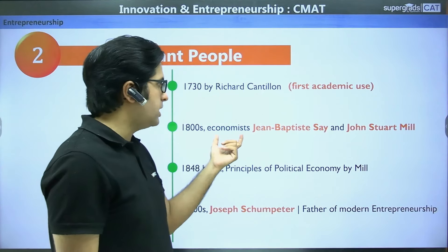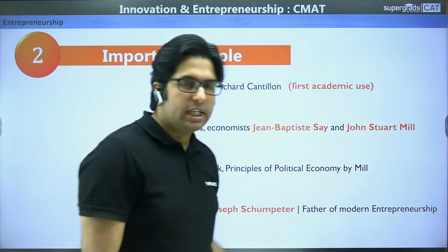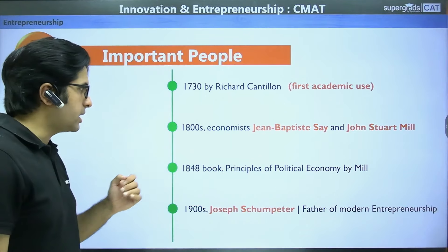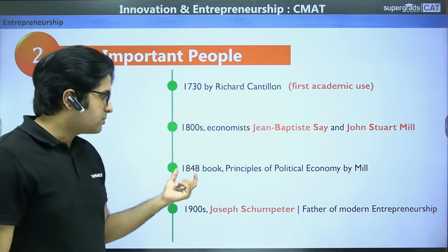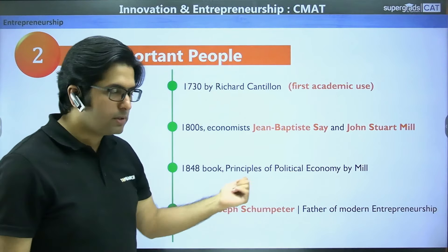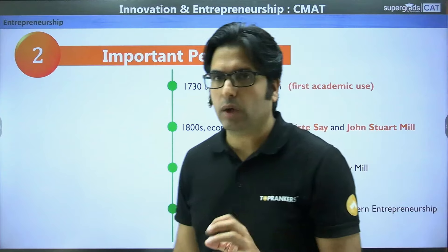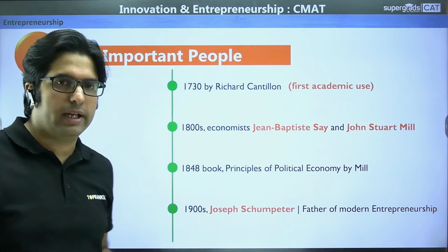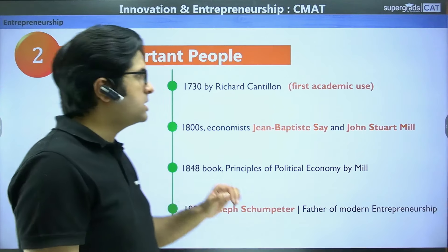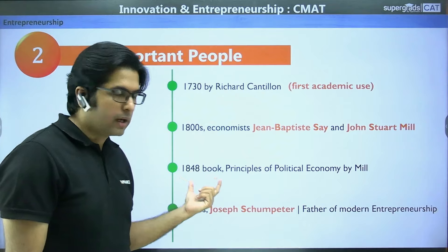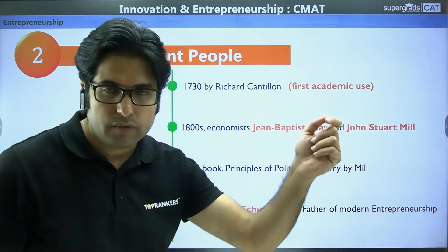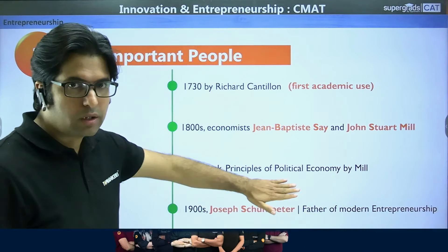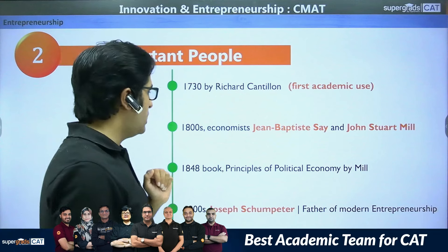Then around the 1800s, economists Jean-Baptiste Say and John Stuart Mill were the two important economists who made heavy use of entrepreneurship in the sense we use today. In his book Principles of Political Economy published in 1848, J.S. Mill used this in the truest sense that we understand entrepreneurship today. From 1848 onwards, this term picked up significantly. Remember this book — Principles of Political Economy — which is considered responsible for propagation of the term, although the first academic use was in 1730.